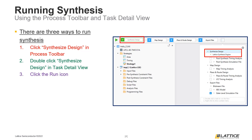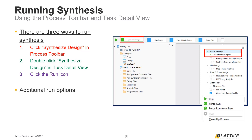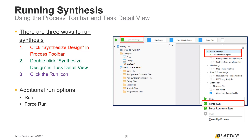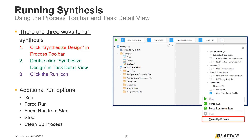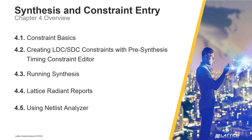Radiant also has additional run options accessible by right-clicking anywhere in the process toolbar or task detail view. There are five options: Run works the same as the green run icon; Force Run forces a step to run even if already completed; Force Run from Start reruns the entire project flow starting with Synthesize Design; Stop halts the project flow at whichever step is currently running; and Cleanup Process resets the entire project flow, allowing users to rerun synthesis. That concludes this section — select the next video titled Section 4.4: Lattice Radiant Reports.